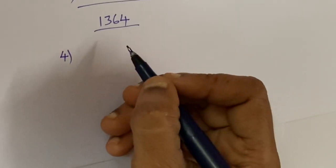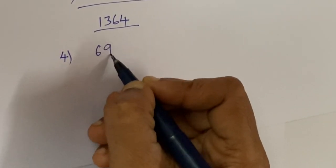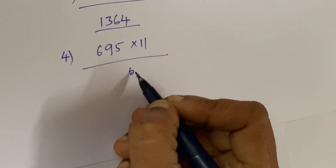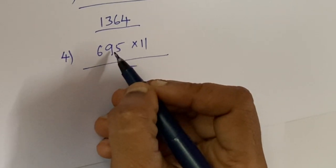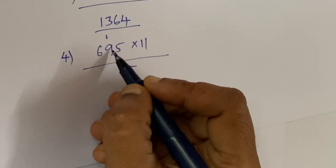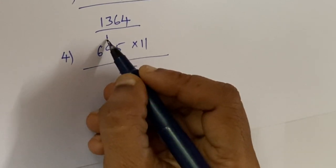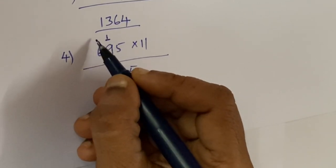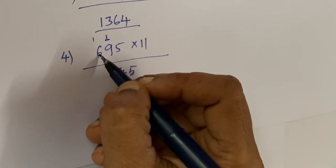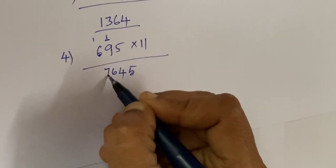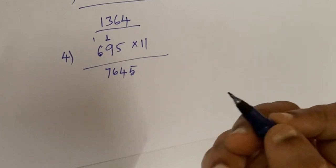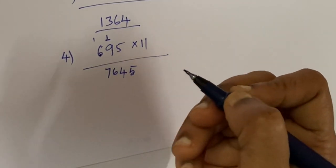Next example: 695 into 11. So here, first the units place is 5. Then 9 plus 5 is 14, so 1 carries over. Next, 9 plus 6 is 15, plus 1 here (the carry) equals 16. Next, 6 plus 1 here, that is 7. So 7645 is the answer.